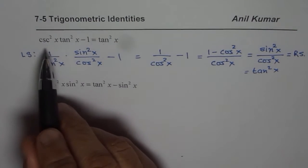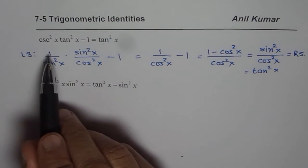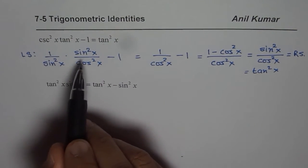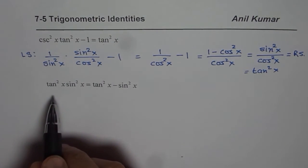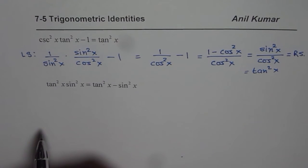So the strategy here is write all the trigonometric ratios in terms of sin and cos and then simplify. That helps. Now let us look into the second equation.